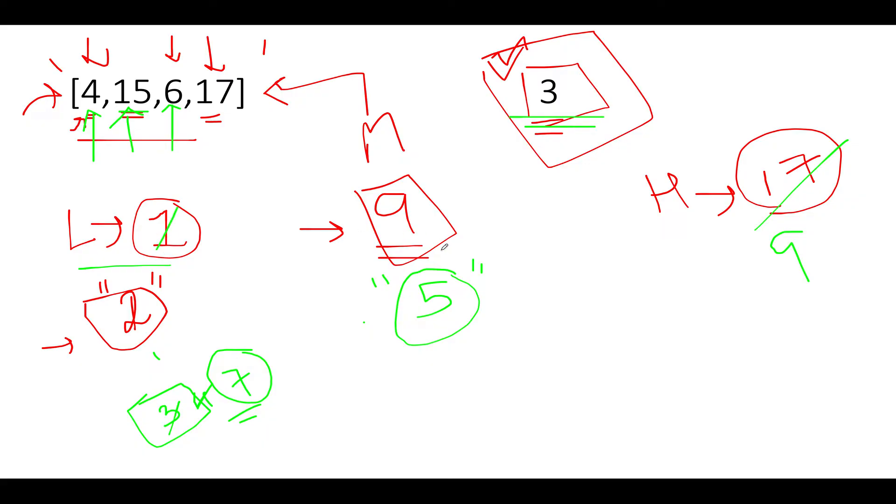As a result, we should increment our low pointer to mid plus 1. Low gets updated to 5 plus 1, which is 6. Let's shoot for the next iteration. 6 plus 9 is 15, divided by 2 gives 7. So mid is 7. Now let's assume we're distributing 7 candies to each child: 4 by 7 gives 0, 15 by 7 gives 2, 6 by 7 gives 0, 17 by 7 gives 2. So 2 plus 2 equals 4 total children can be supported, which is again greater than our target value of 3.